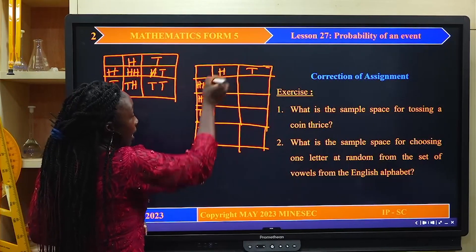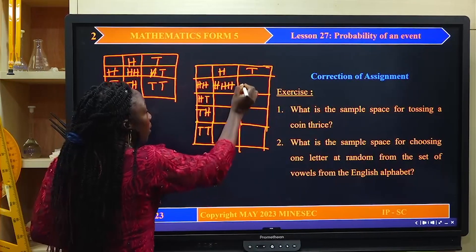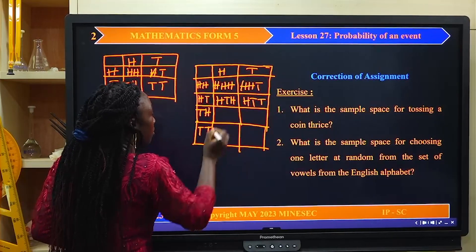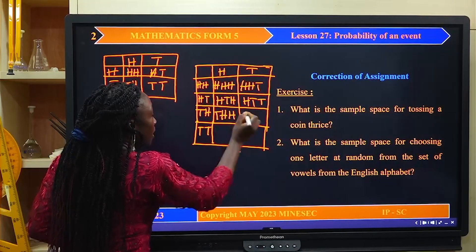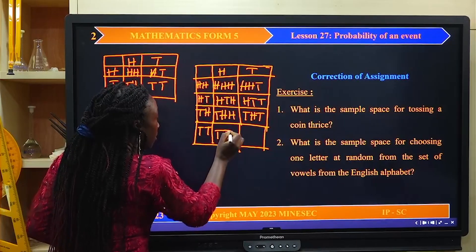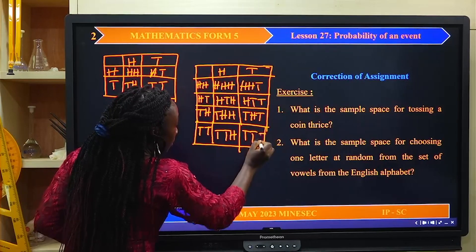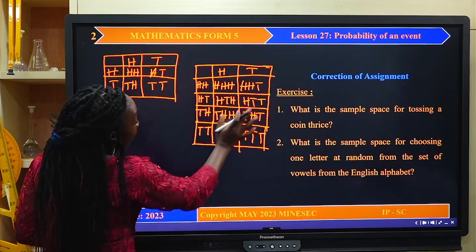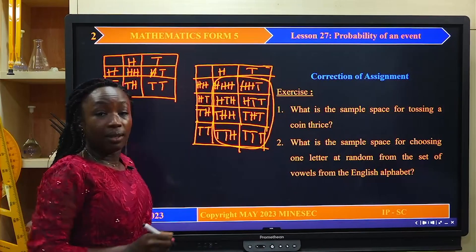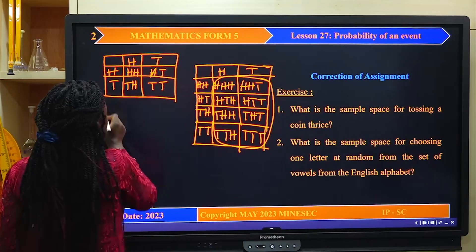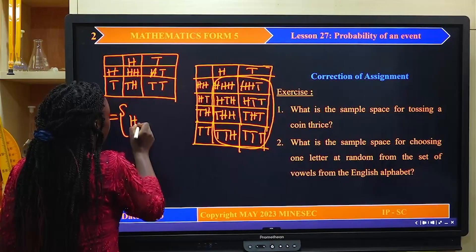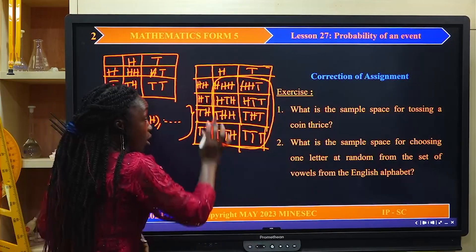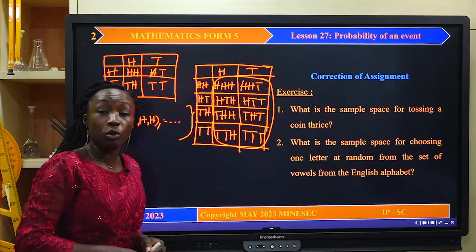Tossing the coin three times gives the following outcomes: head-head-head, head-head-tail, head-tail-head, head-tail-tail, tail-head-head, tail-head-tail, tail-tail-head, and tail-tail-tail. So the sample space for tossing a coin thrice is simply collecting all of these results into a set.